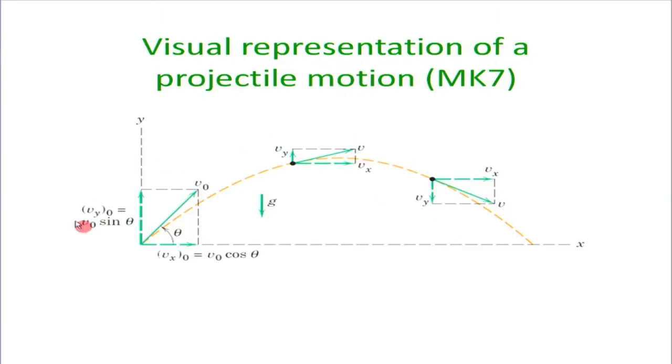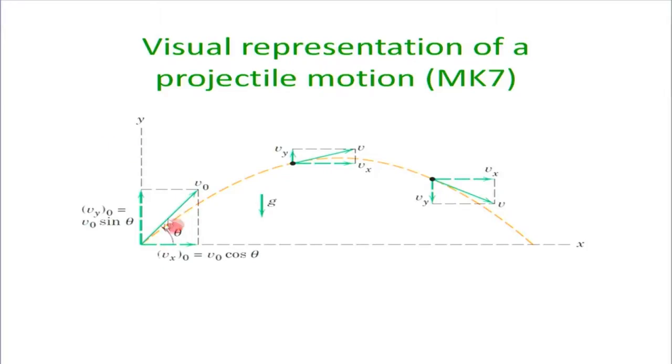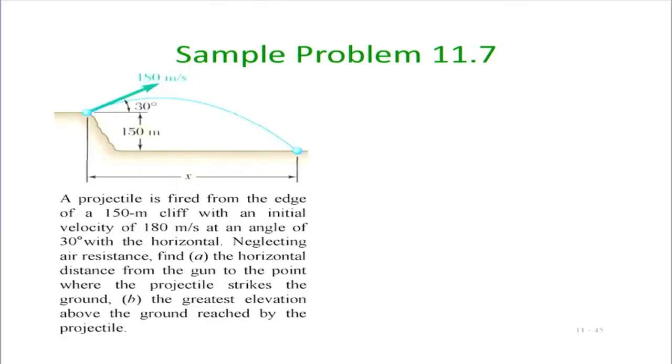This motion is called projectile motion, seen when we throw a stone, hit a ball, or throw something from the top of a building. Anything acting under the influence of gravity with some initial velocity in x and y direction produces parabolic motion. We will do a simple problem to see how the kinematics of projectile motion is understood.